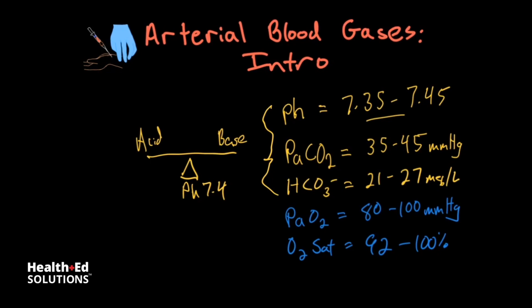The last two values relate to oxygenation. They tell us about the partial pressure of oxygen or the oxygen saturation, which is the percentage of hemoglobin in the blood that is bound with oxygen.